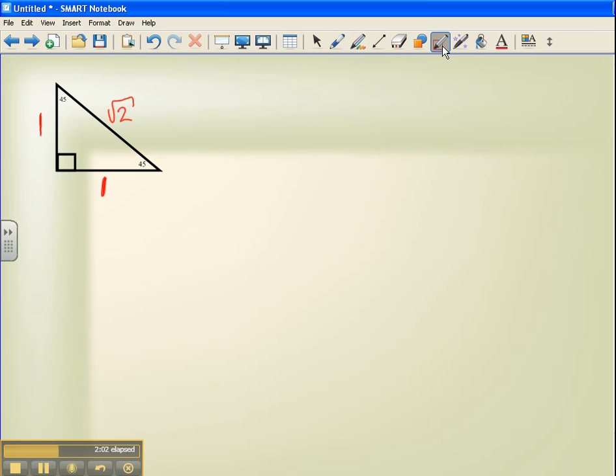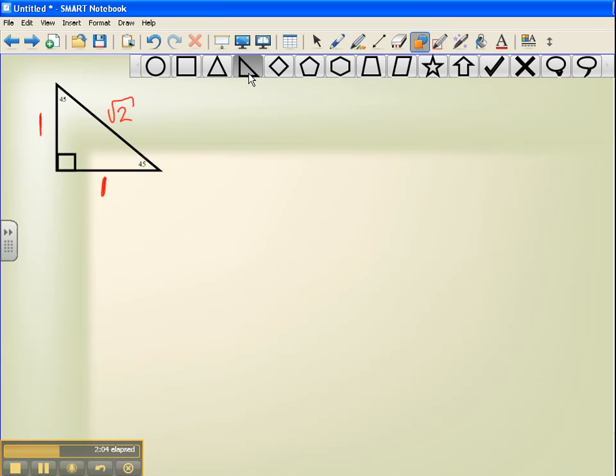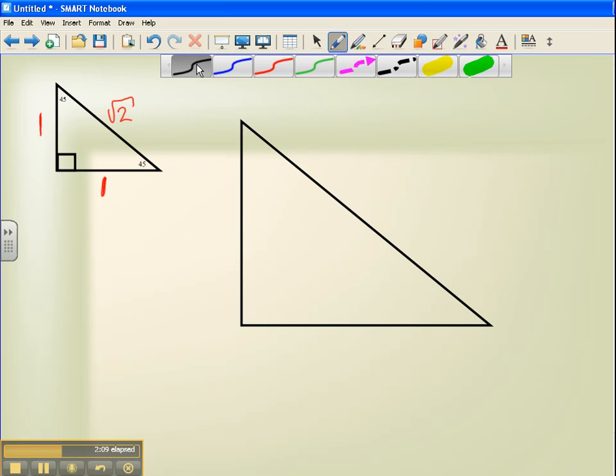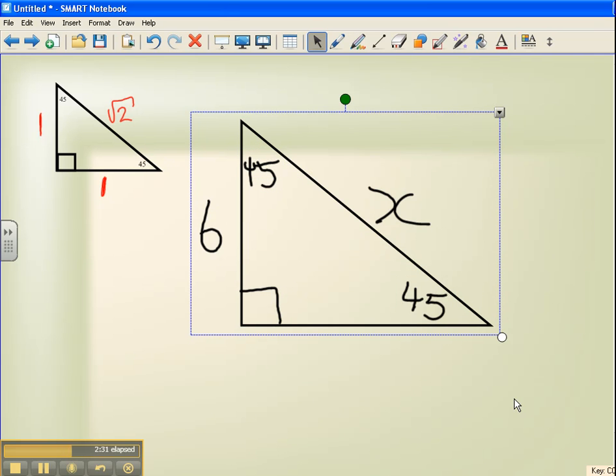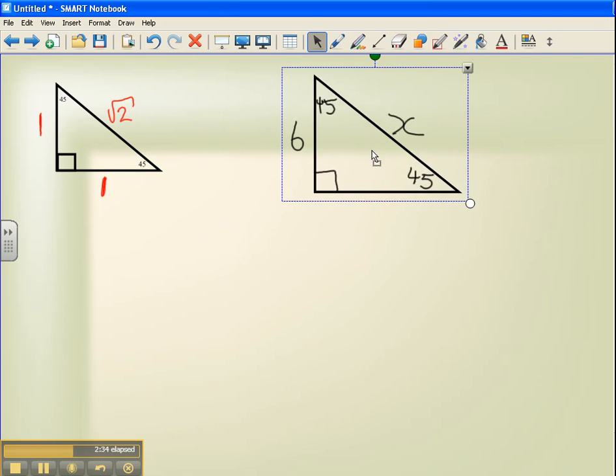All right. So let's say we are given a triangle. Now we know part of the triangle. We know that's a 90-degree angle. We are told that this is 45. We are told that this is 45. We know that this is 6 units long. But we don't know how long that side is. That's our question.